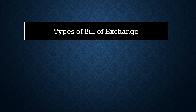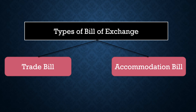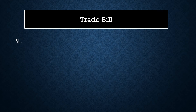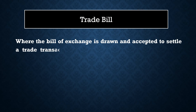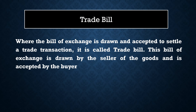Now we will discuss the types of bill of exchange. There are two types: trade bill and accommodation bill. In a trade bill, the seller of a particular product will prepare the bill of exchange and it will be accepted by the buyer of the product. The seller becomes the drawer, the buyer becomes the drawee. Any bill of exchange drawn for a sales transaction is called a trade bill.